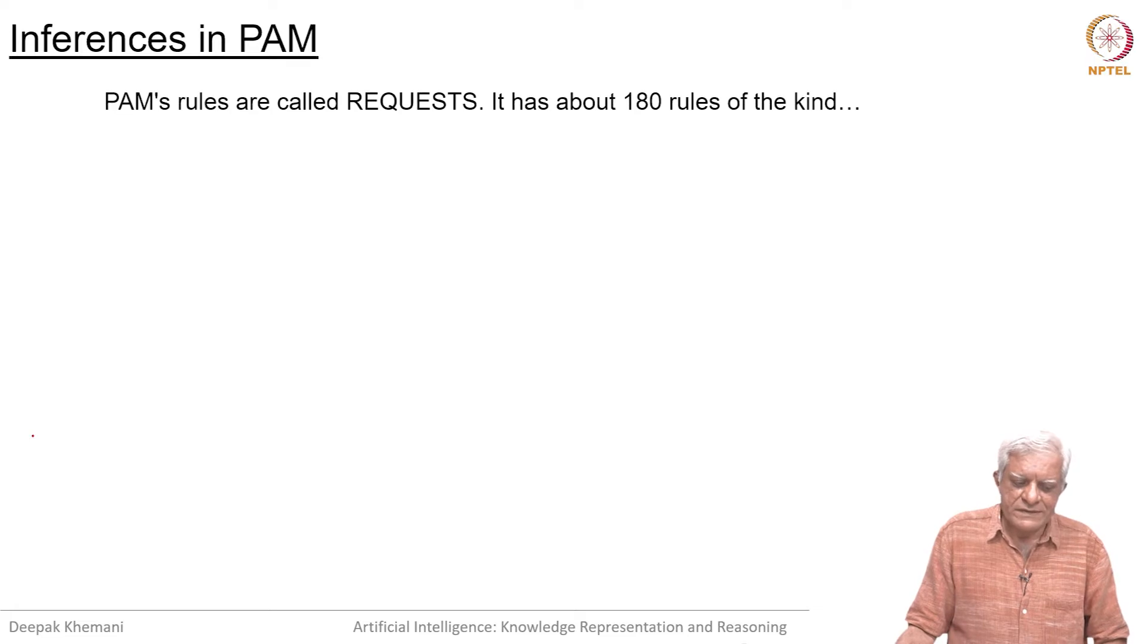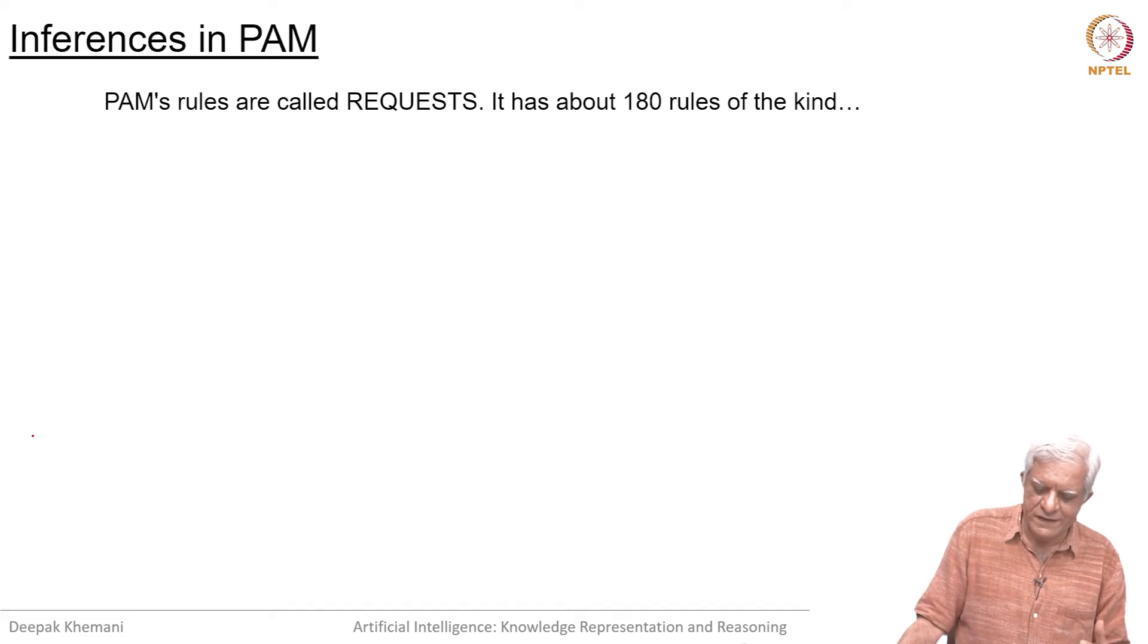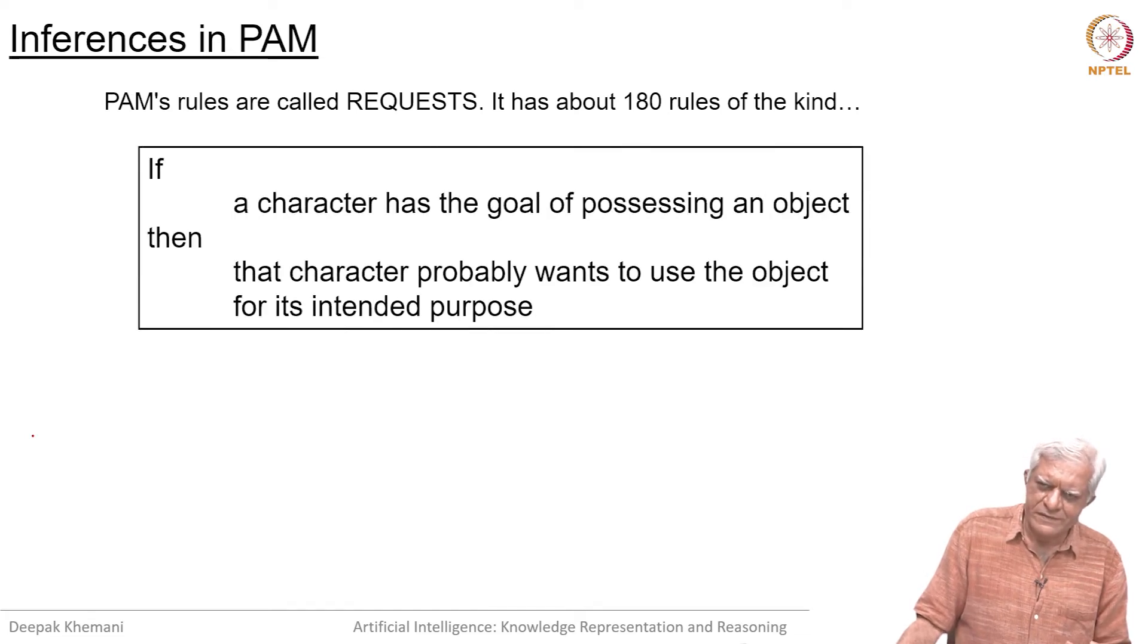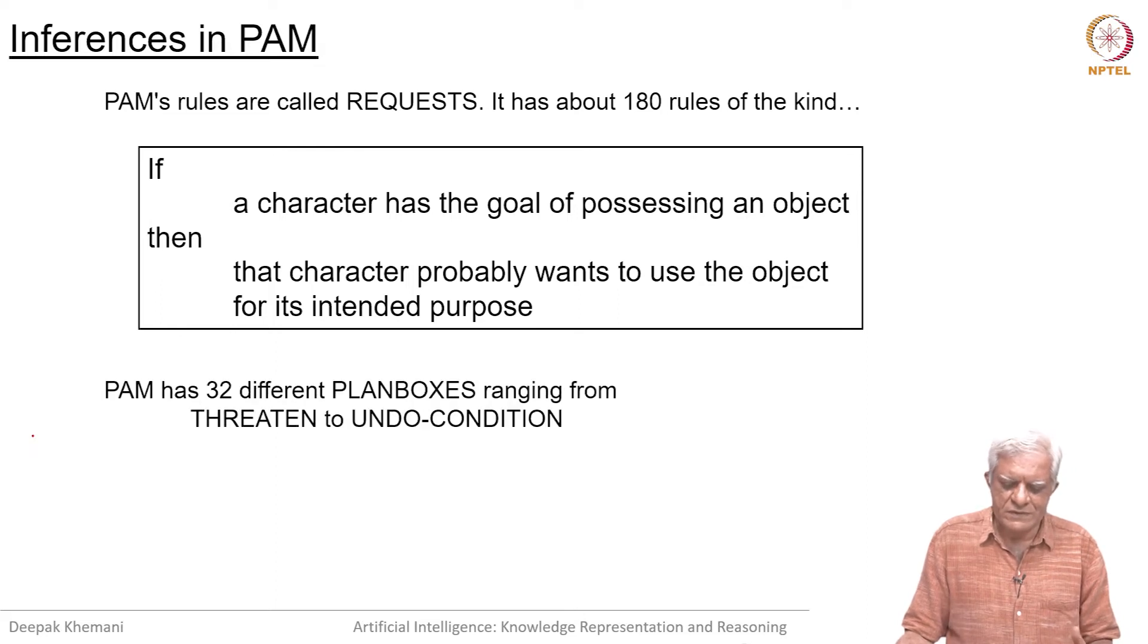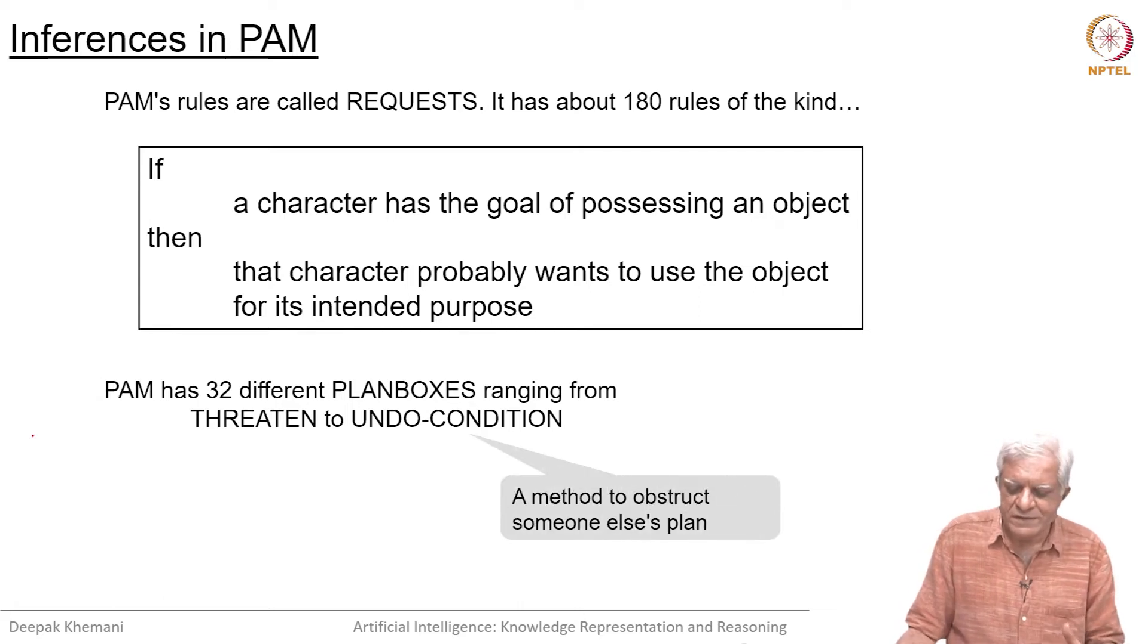Now, what are the kind of inferences that PAM can make? PAM uses rules just like Eliot did. They used to call the rules as requests, and it had about 100 rules of different kinds. For example, if a character has a goal of possessing an object, that character probably wants to use the object for its intended purpose. It is trying to understand why does this person want this object. PAM has 32 different plan boxes ranging from threaten to undo conditions for the control group.